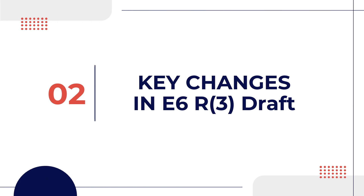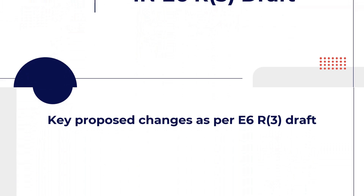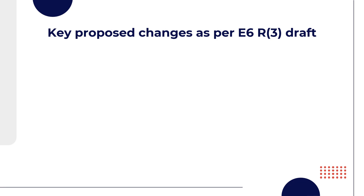Now let us see what are the key changes in E6 R3 draft. Please note that this is a draft guideline shared by ICH GCP to take opinions of all the stakeholders across the globe, and they have proposed changes that would be finalized in E6 R3, which is going to come in 2024. There are 10 highlight areas which have the most impact when it comes to E6 R3.